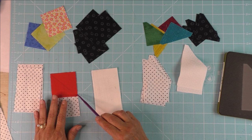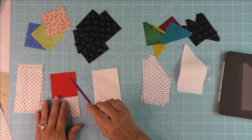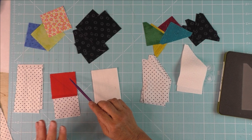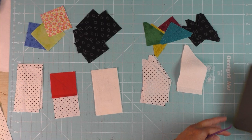Always put the diagonal line on the same side and stitch and trim in the same direction. In this case I'm always trimming off the right corner. It doesn't matter which direction you do it in, just do all of them in the same direction.